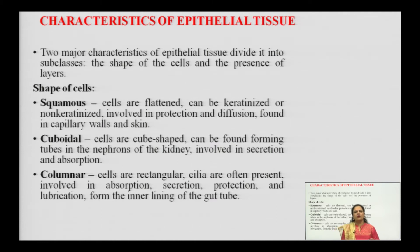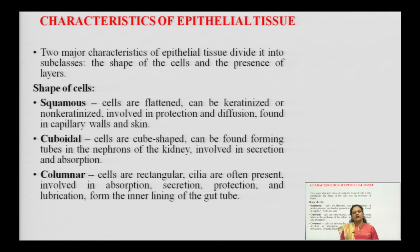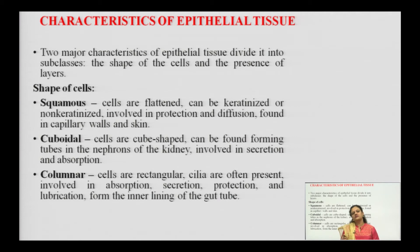The third type is columnar epithelial tissue — cells that are column-shaped or rectangular. Sometimes cilia are present, sometimes absent. This tissue is involved in absorption, secretion, protection, and lubrication of the surface area. Columnar epithelial tissue forms the inner lining of the gut tube, which contains our digestive systems, digestive organs, and lower GI systems — including gut mucosa and muscle layers.